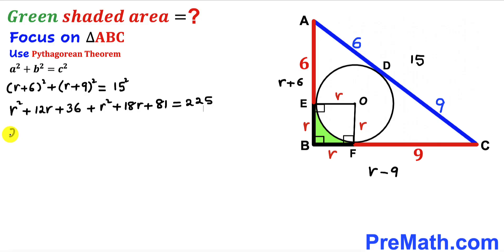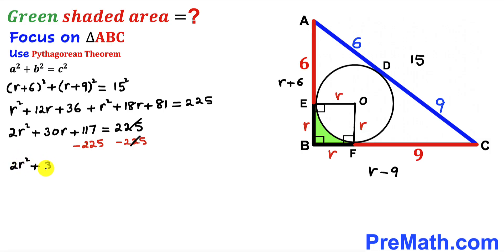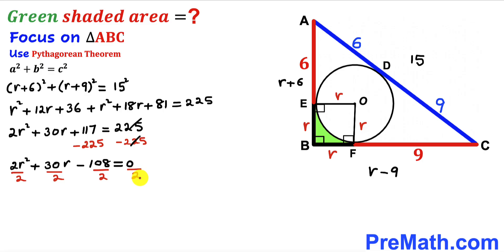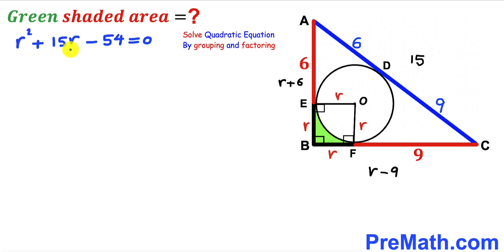Subtracting 225 from both sides, we get 2r² + 30r − 108 = 0. Since all terms are divisible by 2, dividing through by 2 gives us r² + 15r − 54 = 0. So we end up with this quadratic equation: r² + 15r − 54 = 0.